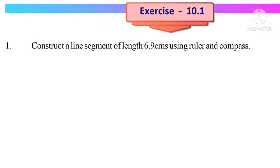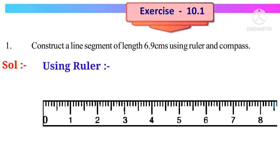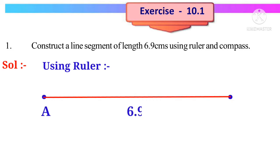Exercise 10.1. First problem: Construct a line segment of length 6.9 centimeters using ruler and compass. Solution: Using ruler, take the scale and mark a point at 0 and another point 9 small lines after 6. Now join these two lines using scale and put initial point A, final point B.